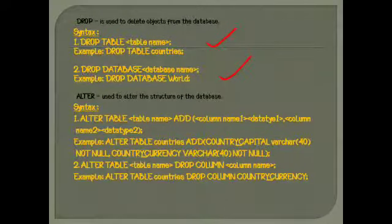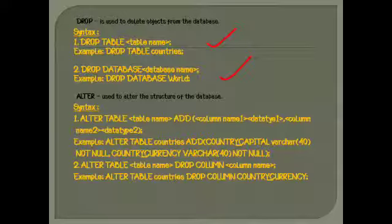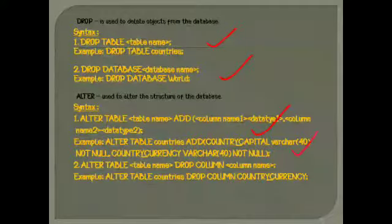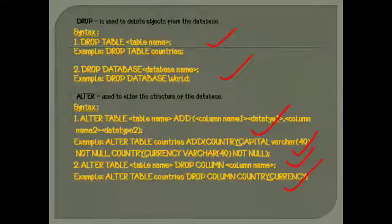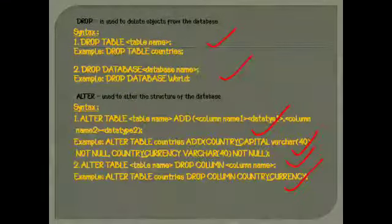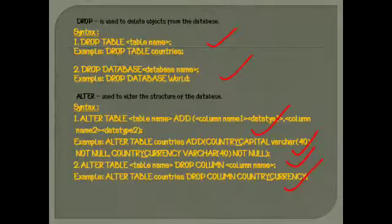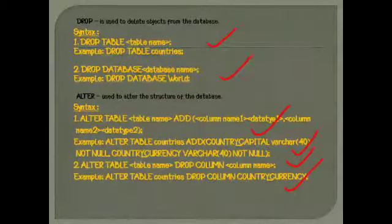Next is the ALTER command, which is used to alter the structure of a database. This is the syntax for the ALTER command and an example, along with the next syntax and next example. We can add columns to any table by using the ALTER command, and also drop any column by using the ALTER command.